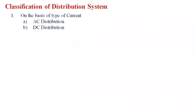This is the classification of the distribution system. It is classified on the basis of five parameters: type of current, construction, service, number of wires, and scheme of connection. On the basis of type of current, the distribution system is classified into two types: AC distribution system and DC distribution system.